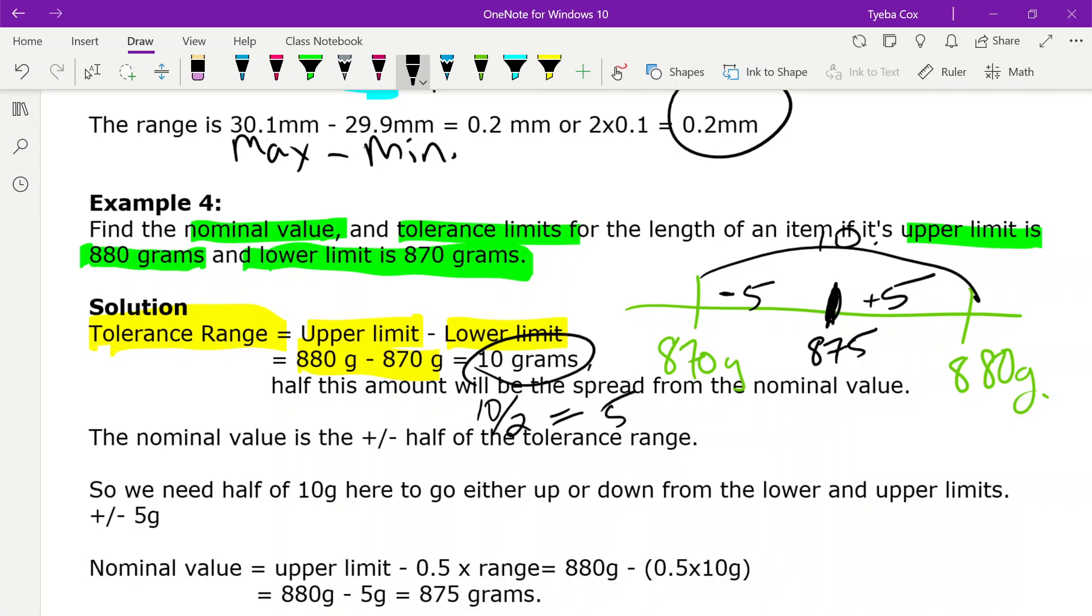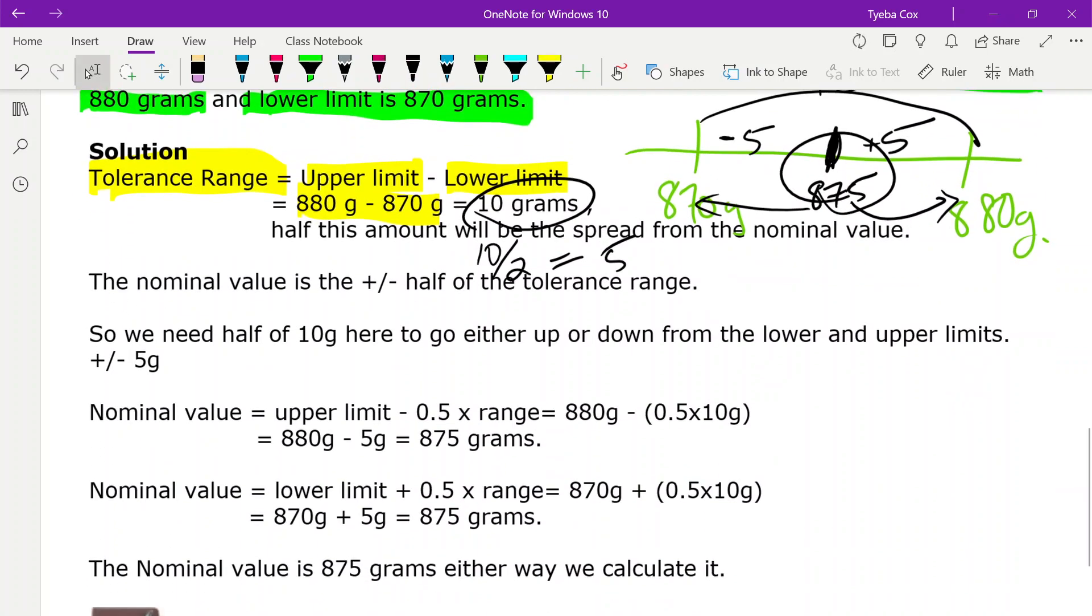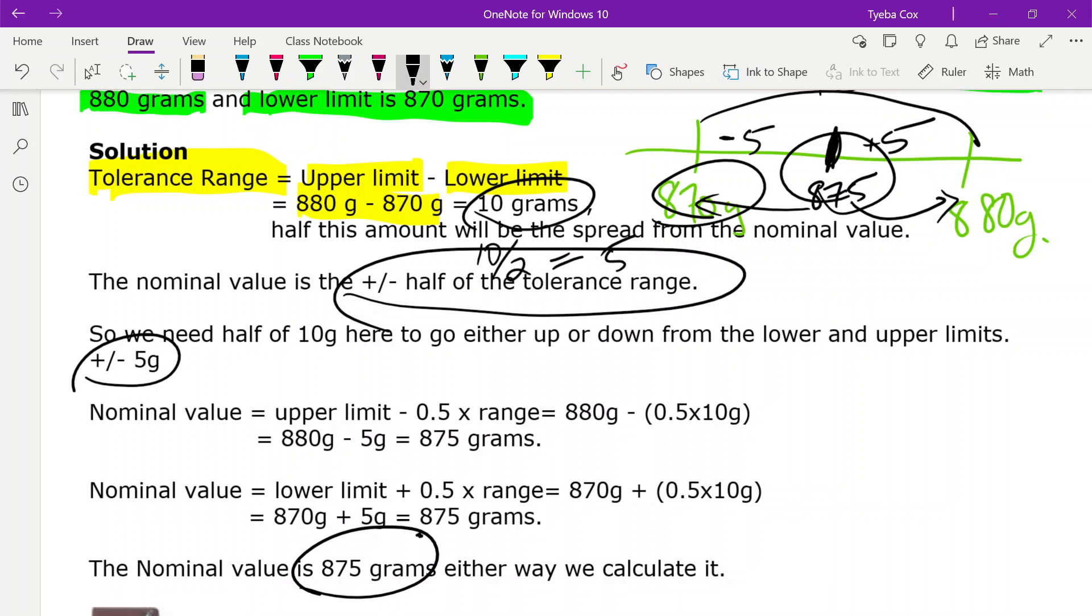Now, our nominal value is going to be plus or minus half the tolerance range. So to get my max, I added the 5. To get my min, I subtracted the 5 from that value. So we're working backwards here. So our nominal value will be the upper limit minus this value that we found here, so the plus or minus the 5. We're going to minus the 5 to get to our nominal value for our upper limit. Now, our nominal value, if we have our lower limit, we add the range, we add half of the range to that, so that 5, and we end up getting our 875 grams. So either way we calculate it, if we look at it on a number line, if we're using the upper limit, if we're using the lower limit, we can find in all of those cases that our nominal value is 875 grams.